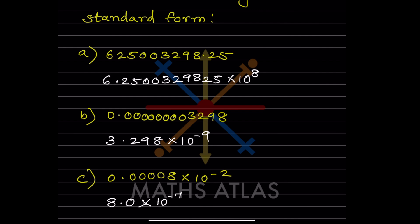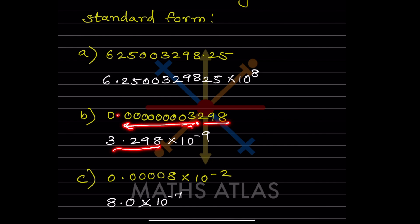If the number starts with 0.000..., the power of 10 will be negative. For 0.000003298, ignoring the zeros we think of 3298, so the decimal goes after 3, giving 3.298. Counting in reverse — including the zeros: 1, 2, 3, 4, 5, 6, 7, 8, 9 — the answer is 3.298 × 10^-9.